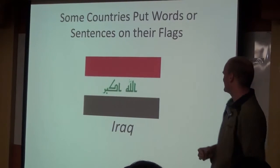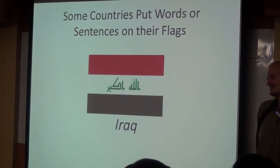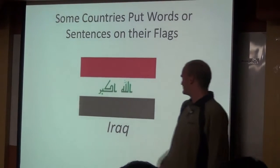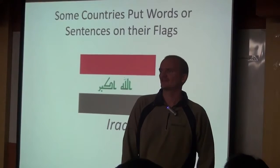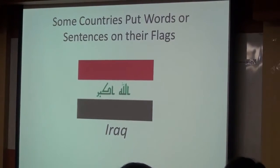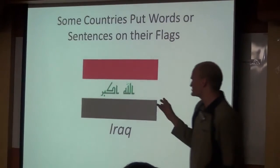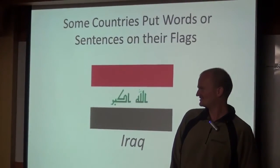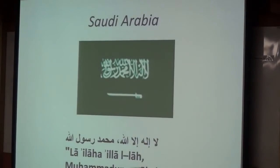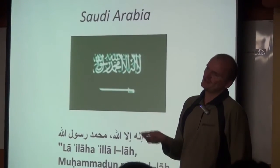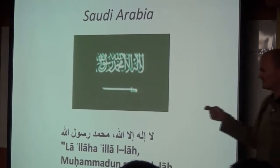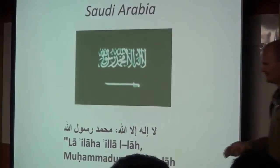Some countries put words or sentences on their flag. What does this say? Who knows? This says 'Allah Akbar' — it means 'God is great.' But which God? Supposedly, before 2003, this was written in Saddam Hussein's own handwriting. Are you sure we should have it? Saudi Arabia goes one step further. Mozambique had a gun — Saudi Arabia has a sword. What's this for? I think it's for cooking cheese kebab.